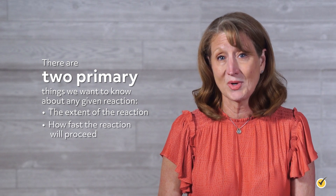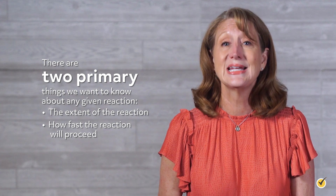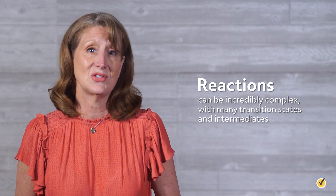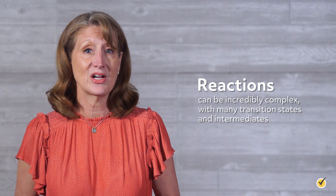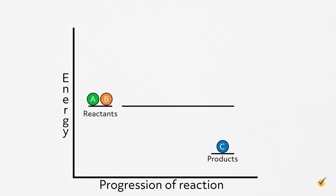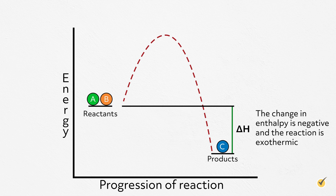Second, we want to know how fast the reaction will proceed. This falls under kinetics. Reactions can be incredibly complex with many transition states and intermediates, but for now we'll focus on a theoretical reaction that's quite simple. For this reaction, our reactants are higher in energy than our products, which tells us the reaction releases energy — the change in enthalpy is negative and the reaction is exothermic. This is the thermodynamics of the reaction and directly impacts the equilibrium, meaning how much reactant will ultimately convert to product.